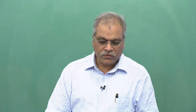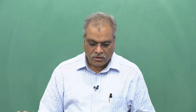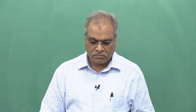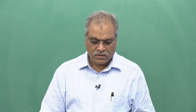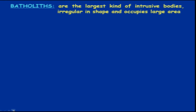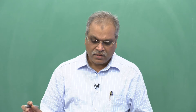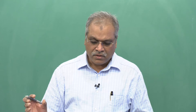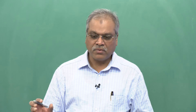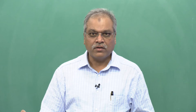After the lopolith, one of the major forms of igneous rocks is batholith. Batholiths are the largest kind of intrusive bodies, irregular in shape, and occupy very large areas. Compared to dykes and other intrusive bodies that vary from 10 to 100 meters, batholiths occupy very large areas.